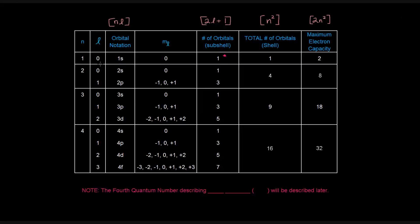So far we've discussed the three quantum numbers that describe orbitals. The fourth quantum number, which describes electron spin and is denoted m sub s, will be described later. Thank you for watching — if you found the video helpful, don't forget to like, comment, subscribe, and share with friends. Happy studying.